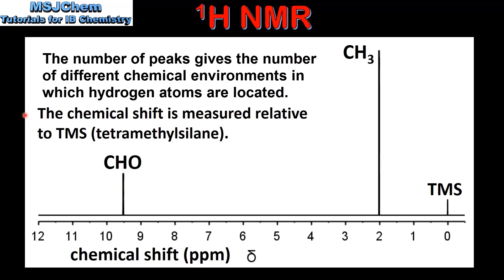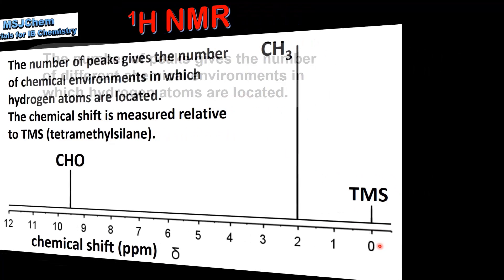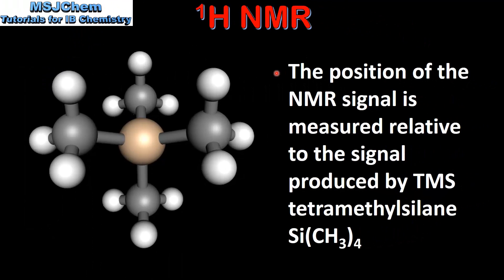The chemical shift is measured relative to TMS, which is tetramethylsilane. We can see this peak on the right and it's assigned a value of 0 ppm. The position of the NMR signal is measured relative to the signal produced by TMS, tetramethylsilane. Tetramethylsilane is composed of a silicon atom bonded to four methyl groups.